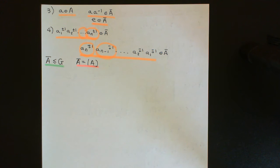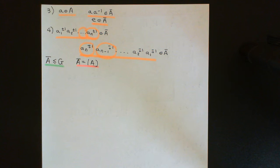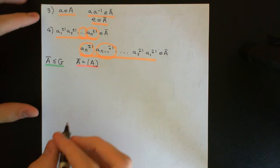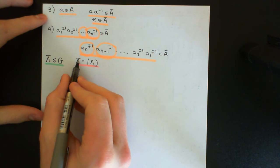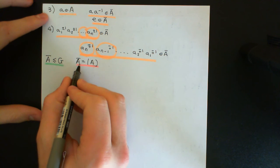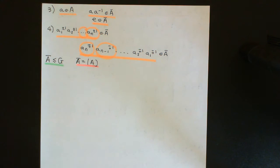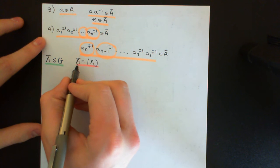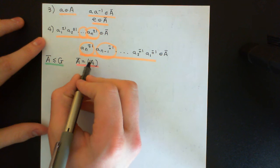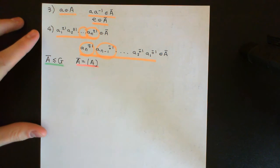Welcome back to this next video in which we are discussing subgroups generated by subsets of a group. We've now seen the definition of a subgroup generated by a certain subset, and we've also seen the definition of the closure of a subset. What I now want to show you is that the closure of a subset, which we know is a subgroup of the group G, is equal to the subgroup generated by that subset. These two concepts truly are the same thing, and henceforth we will no longer talk about the closure of a subset A — we'll just talk about the subgroup generated by a subset A.